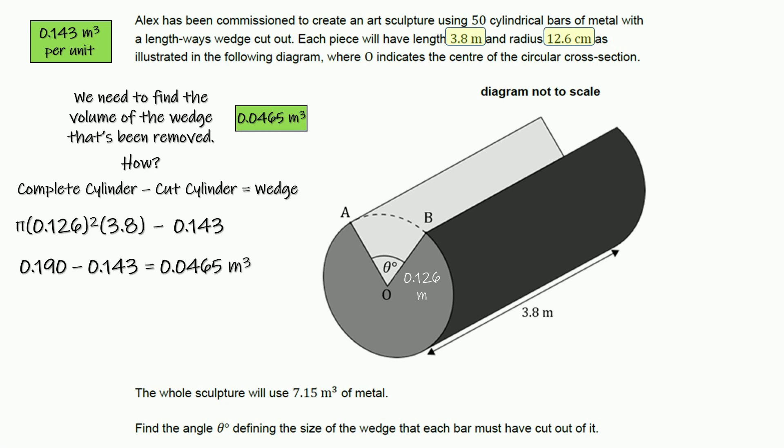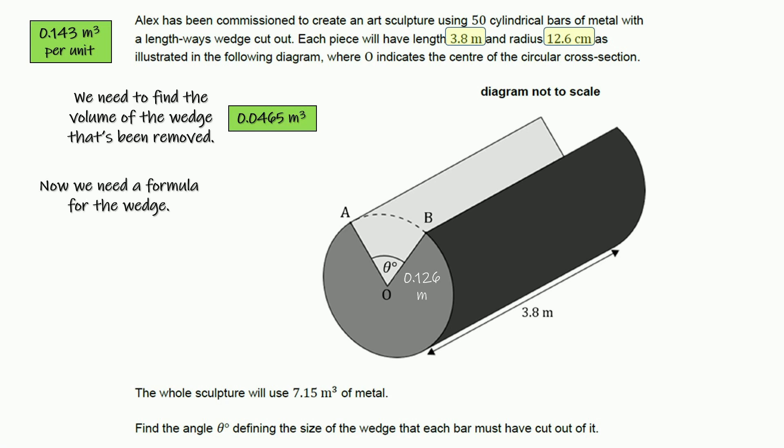All right, so now we know what the volume of the wedge is, and now we can set up a formula for finding the volume of the wedge. We know what it equals, so we're looking for the angle theta. Well, this is just a, if we look at this cross section, that cross section is a sector, and a sector is part of a circle. So pi r squared h times the part we have, which is theta over 360, we know that equals to 0.0465 cubic meters.